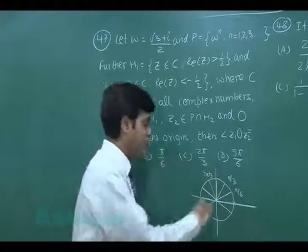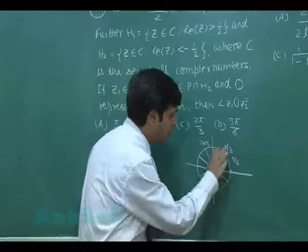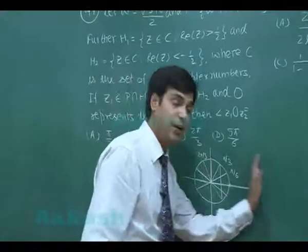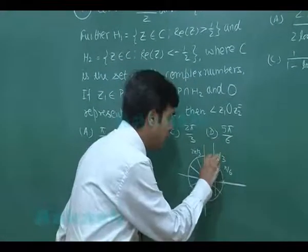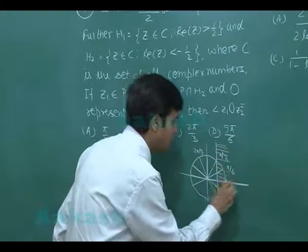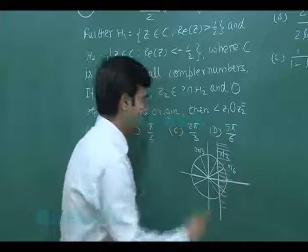If I put the angle pi by 3, it will be giving me half, means on the right side of it the portion is here. So in this manner I can shade it.